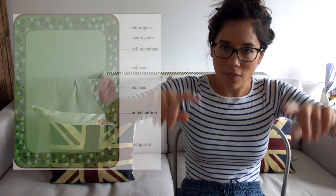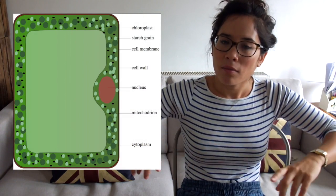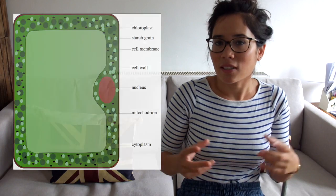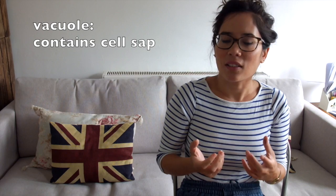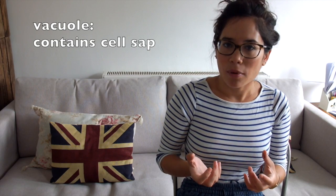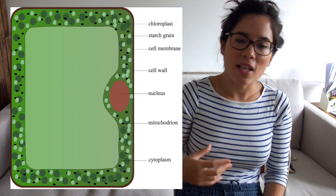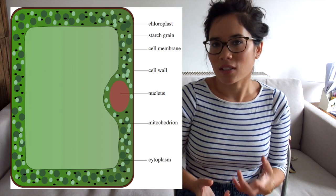Then inside you have the cell membrane — remember, like the animal cell, that controls the entry and exit of substances. We have a rectangle in the middle called the vacuole, which contains cell sap. And then we've got a nucleus squeezed into one corner, which again, like the animal cell, controls the activities of the cell.